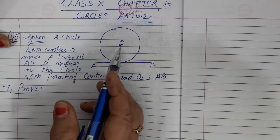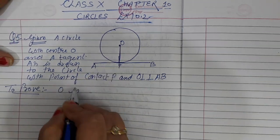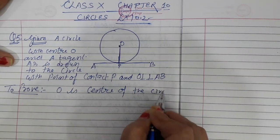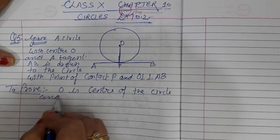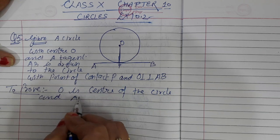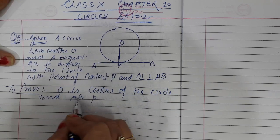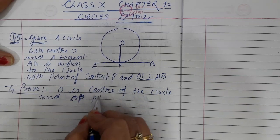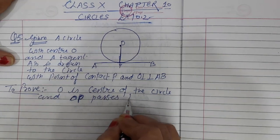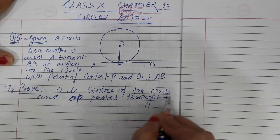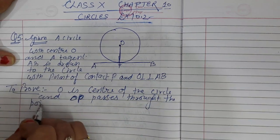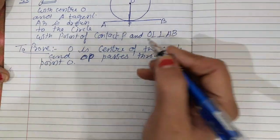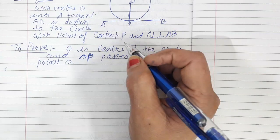That means we have to prove that O is the center of the circle and OP — the perpendicular we drew — passes through the point O.